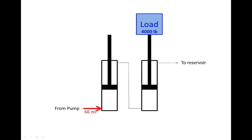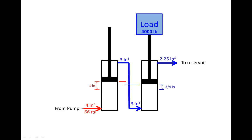Now let's look at what happens to the speeds when the load is on the right side. Before, when the load was on the left, the left cylinder moved faster and further. Is that still the case? With 4 cubic inches going into the left cylinder, it moves 1 inch, and only 3 cubic inches flow out into the right cylinder, moving it only 75% as far. So regardless of which side the load is on, the left cylinder always moves faster and the right cylinder moves slower. The speed difference depends on the ratio of the bottom piston area to the top piston area — in this case a ratio of 3 to 4, which is why the right one moved only three-fourths as fast.